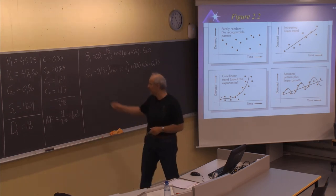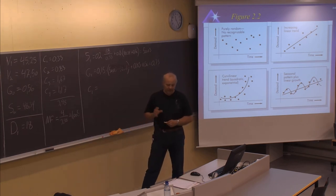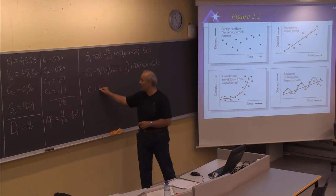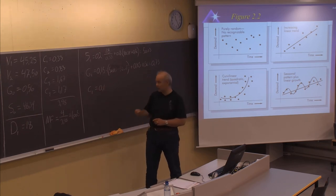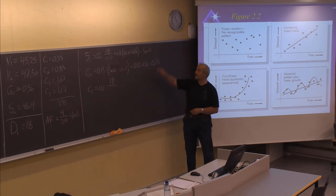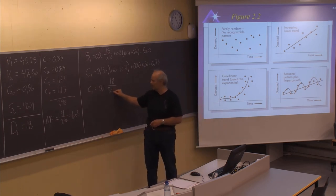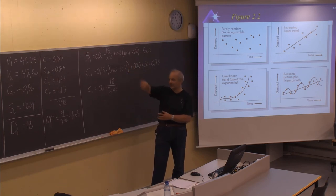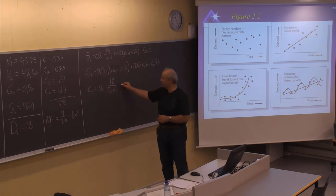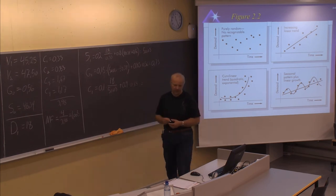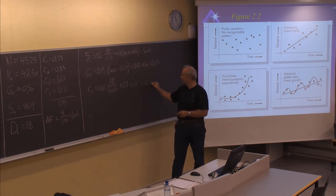At last, we also need to update C1, the seasonal factor. It uses the third smoothing constant, gamma, which is 0.1, multiplied by the new demand of 18 divided by the new value of the series, 50.03. This tells how much in percentage the demand is according to the trend line, which is not seasonalized. Plus 1 minus gamma, which is 0.9, multiplied by the previous seasonal factor of 0.33. This ends up to a value of 0.333 if we include one more decimal.